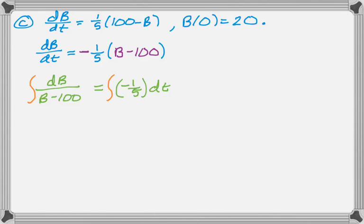So we do that, and we're going to integrate. So on the left-hand side, I get the natural log of the absolute value of B minus 100. And on the right-hand side, I get negative 1/5 T, and then that's where I put my plus C.